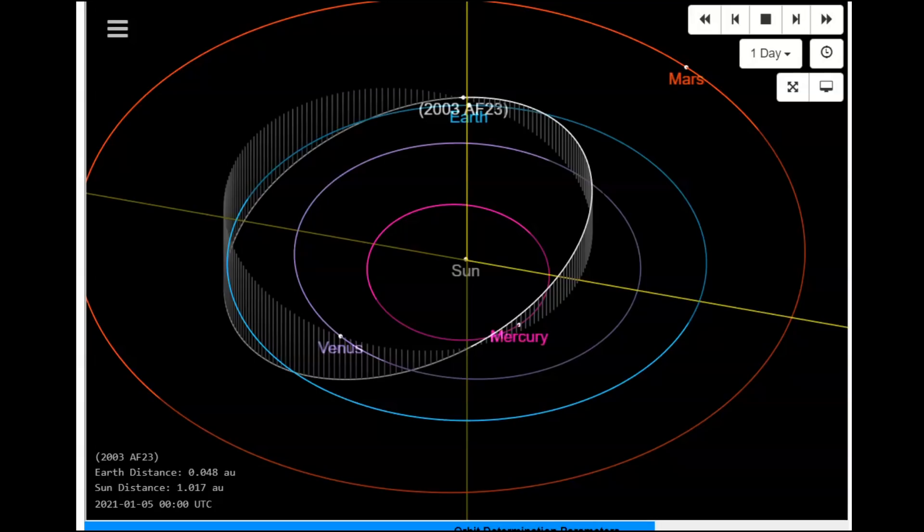All three of these asteroids have a chance of having smaller fragments or companions with them, and I could be off on the time. Now this is what I could calculate for close approach here. I'll move it ahead a little bit here and you can see.